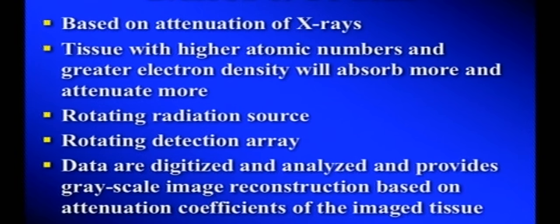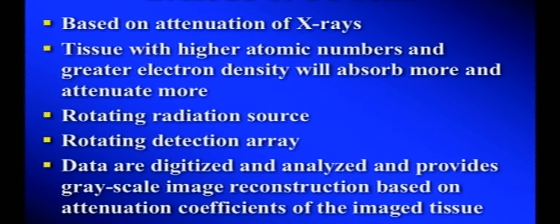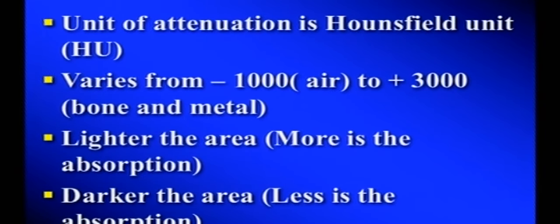Now moving to CT scan basics. Unlike MRI, CT uses X-ray radiation — it is based on attenuation of X-rays. Tissues with higher atomic numbers and greater electron density absorb and attenuate more. A rotating radiation source and rotating detector array digitize data and reconstruct grayscale images based on attenuation coefficients. The terminology here is hyper-dense and hypo-dense (versus hyper-intense and hypo-intense in MRI). The unit of attenuation is the Hounsfield unit, ranging from minus 1000 (air) to plus 3000 (bone and metal).